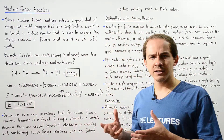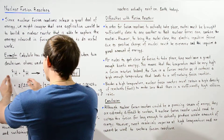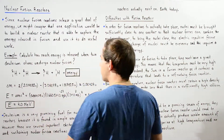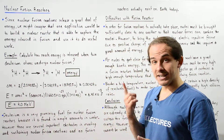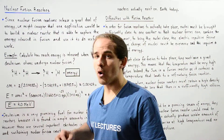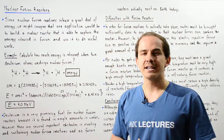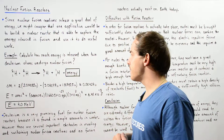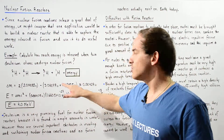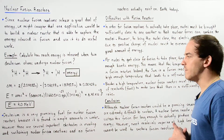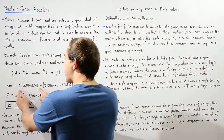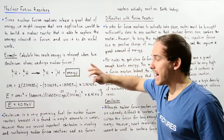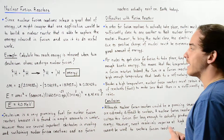Let's begin by calculating the change in mass as we go from the reactant side to the product side — from two deuterium atoms to a single tritium and hydrogen. The mass of a single deuterium is 2.014082 unified atomic mass units, tritium is 3.016049 u, and hydrogen is 1.007825 u. Taking the mass of the reactants minus the mass of the products, we get a decrease in mass of about 0.00429 unified atomic mass units.